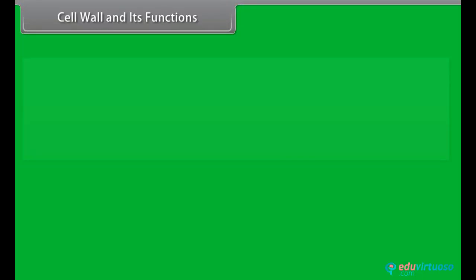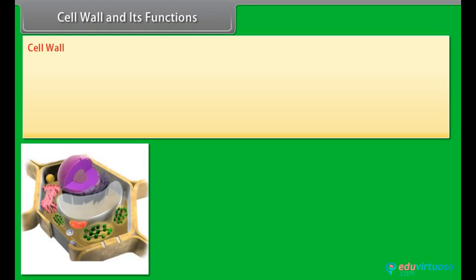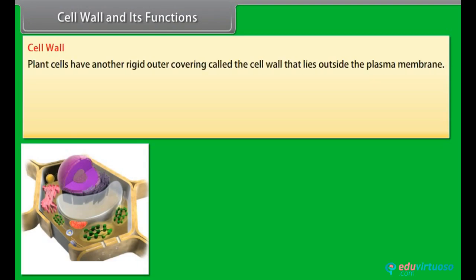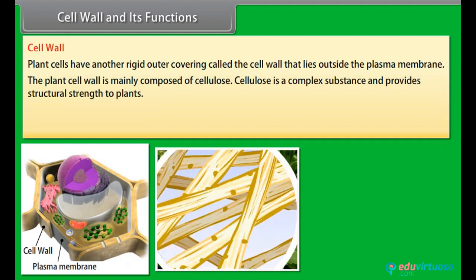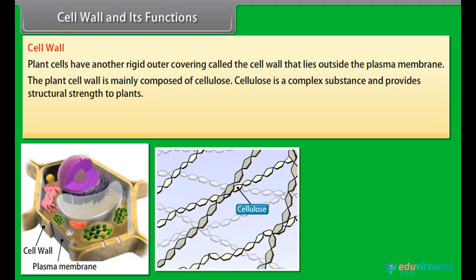Cell wall and its functions: Plant cells have another rigid outer covering called the cell wall that lies outside the plasma membrane. The plant cell wall is mainly composed of cellulose. Cellulose is a complex substance and provides structural strength to plants.